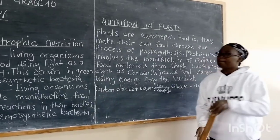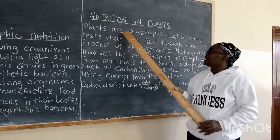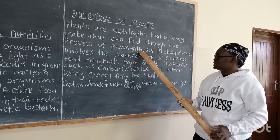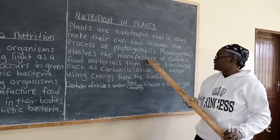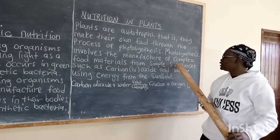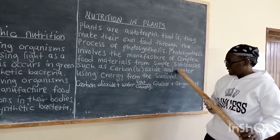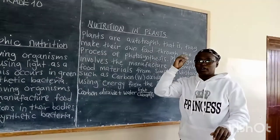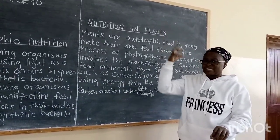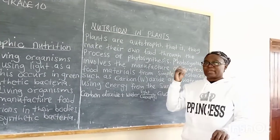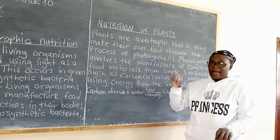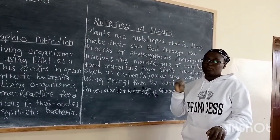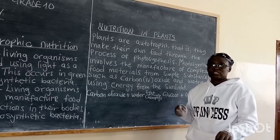Now let's look at nutrition in plants. Plants are autotrophic — they make their own food through the process of photosynthesis. Photosynthesis involves the manufacturing of complex food materials from simple substances such as carbon dioxide and water, using energy from the sun. The chlorophyll found in the leaves captures sunlight; the carbon dioxide then reacts with water and food is made — simple sugars referred to as glucose are formed.